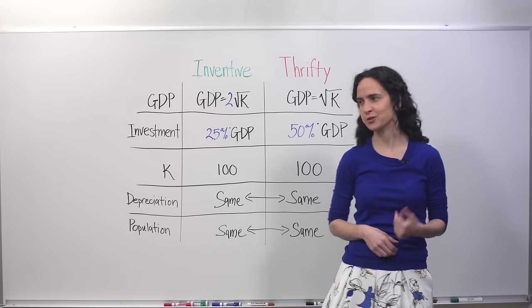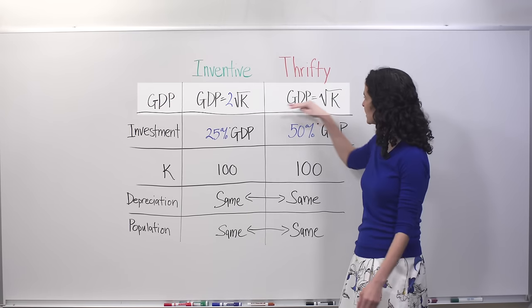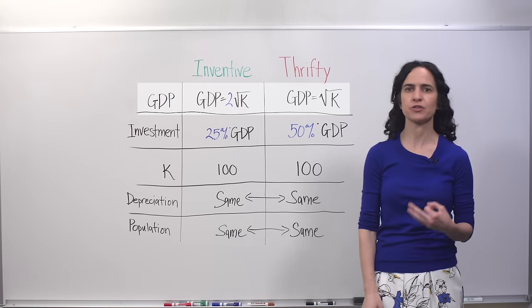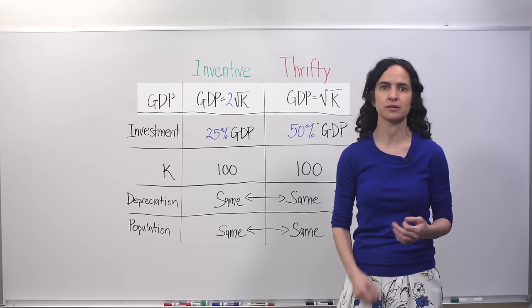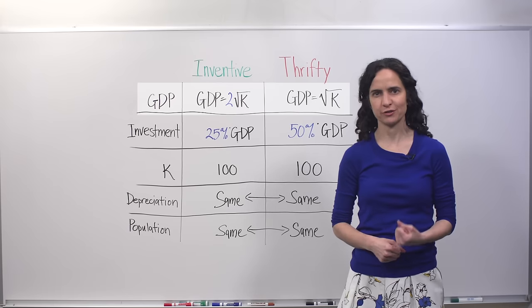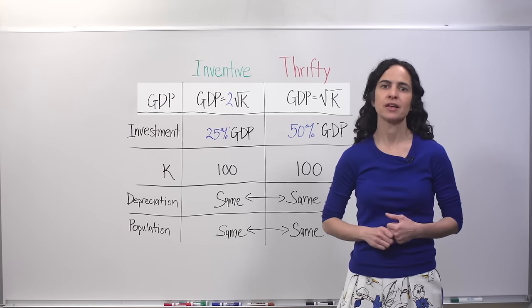First, we'll compare the two countries' production functions, and we see that they differ by a multiple of two, which loosely translates to the country's ideas or productivity. So Inventive, as its name suggests, is more productive with its factor of production, capital, than Thrifty is.